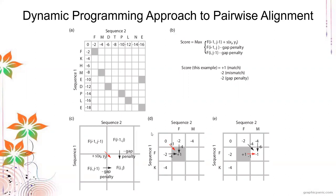Let's look at the scores for this example. The first comparison is F versus F. The diagonal score is zero, and since both are F, it's a match. The reward for a match is plus one, so the score for the first line is zero plus one, which is positive one. The cell above gives negative two minus two, which is negative four, and the cell to the left also gives negative four. The highest among positive one, negative four, and negative four is positive one.